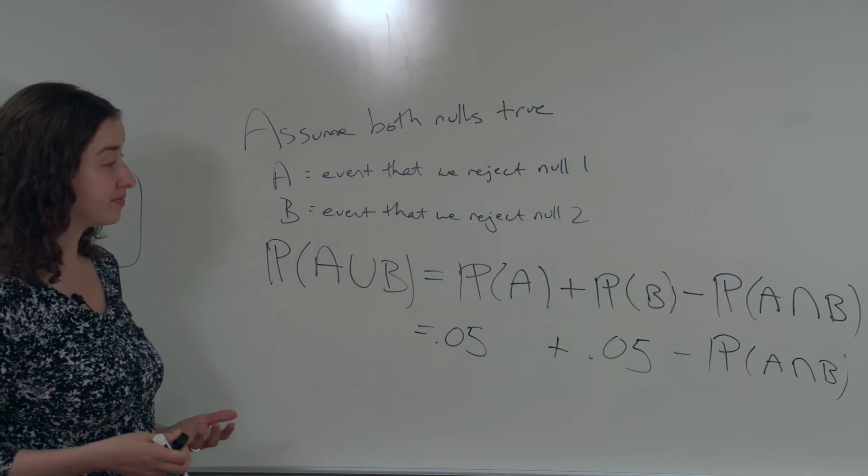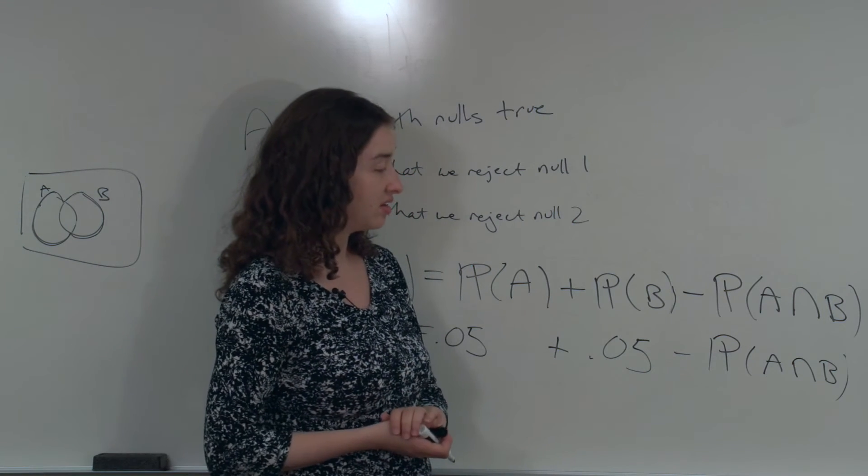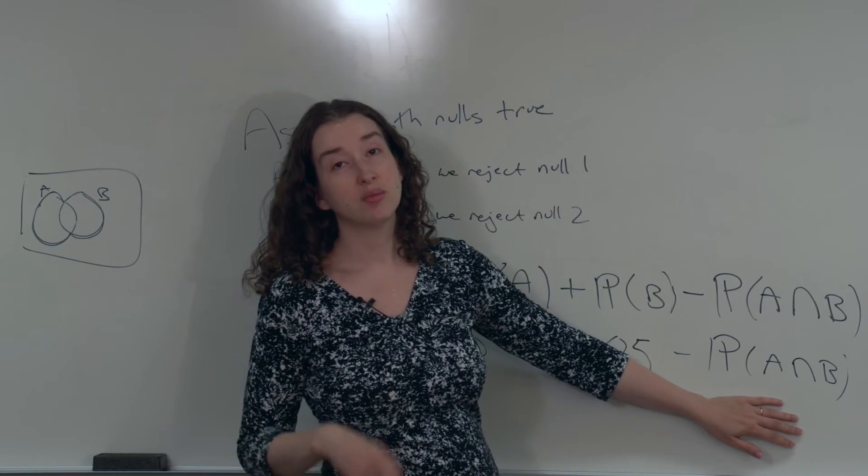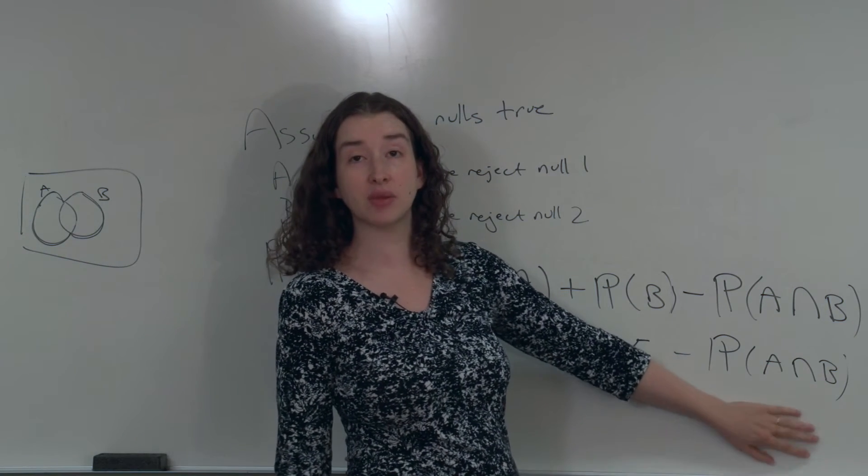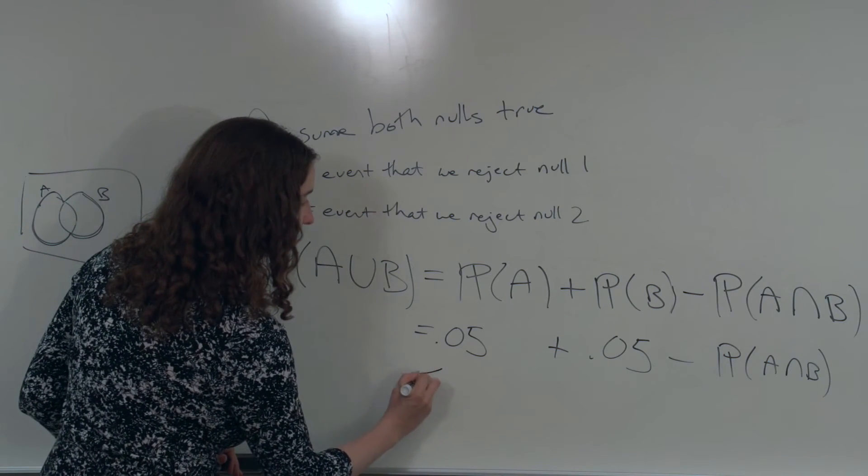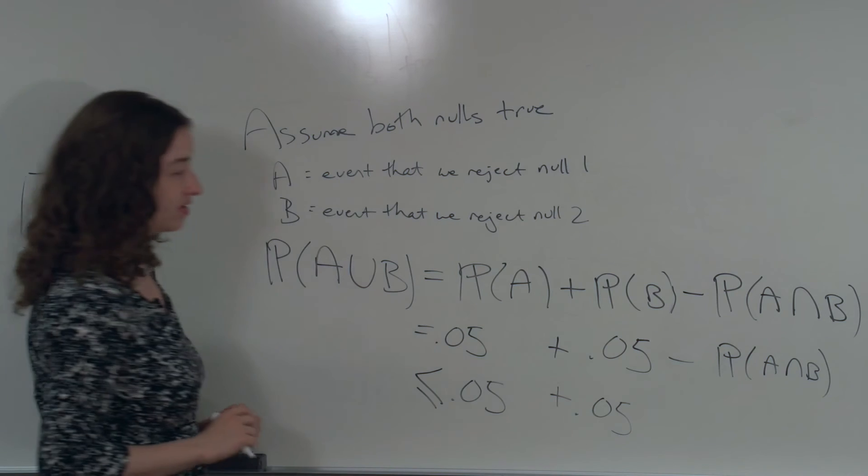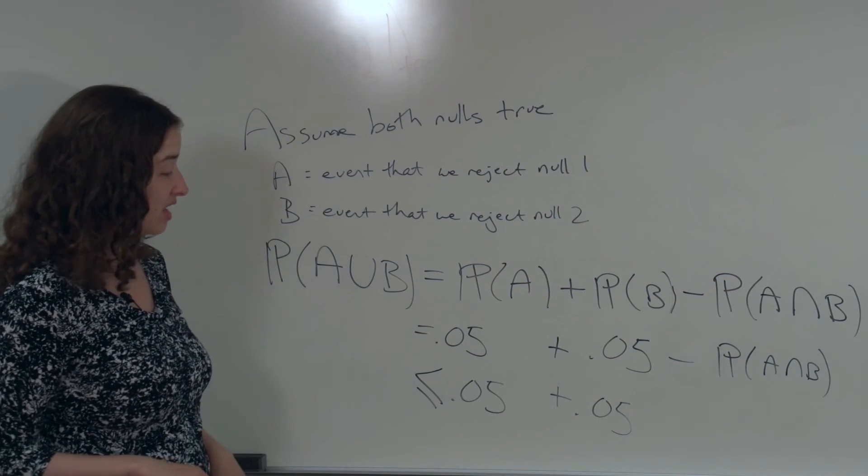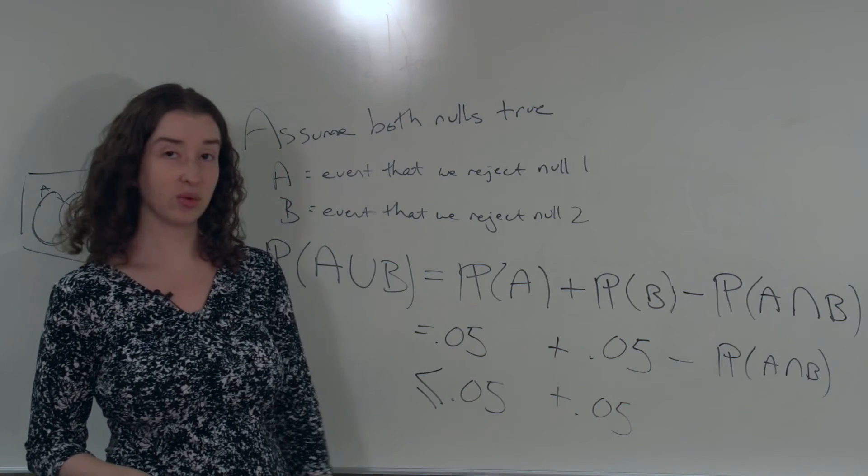However, the Bonferroni method is one particular way to deal with the fact that we don't know this correlation. What the Bonferroni method notices is that this quantity here that we can't identify exactly is a probability, and therefore it has to be between 0 and 1. Most usefully, it has to be positive. What we've said here is that the probability of A or B is equal to 0.05 plus 0.05 minus some positive number. What that means is that if we omit this part over here that we don't actually know, what we can say is that this probability of A or B is less than or equal to 0.05 plus 0.05. In other words, this quantity 0.05 plus 0.05 minus some positive number is smaller than 0.05 plus 0.05 without subtracting some positive number. Or if this number here is 0, it'll be equal.